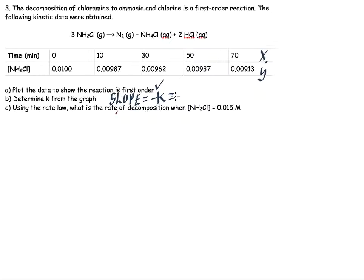The slope is equal to minus k, which is negative 1.25 times 10 to the minus 5. So of course, multiply both sides by minus 1, so we get k is equal to 1.25 times 10 to the minus 5 reciprocal minutes.